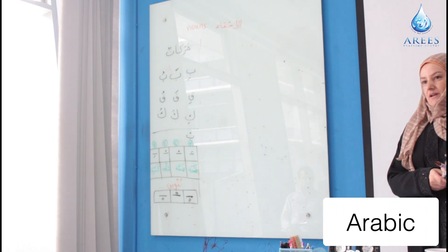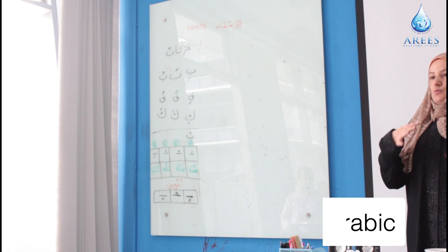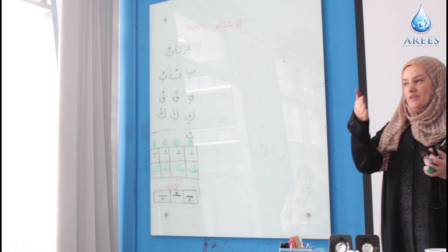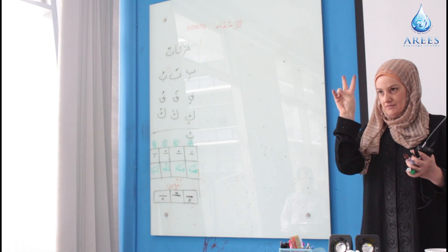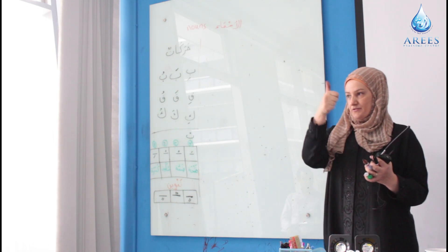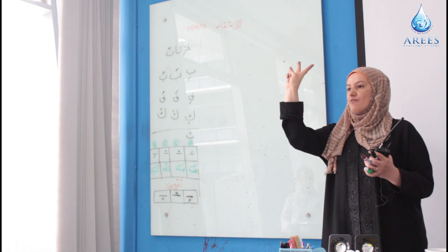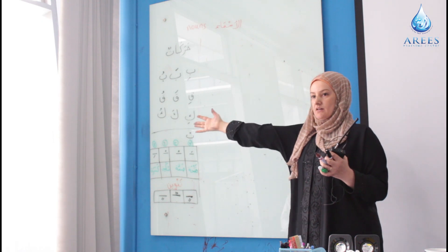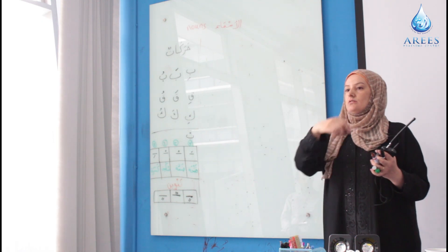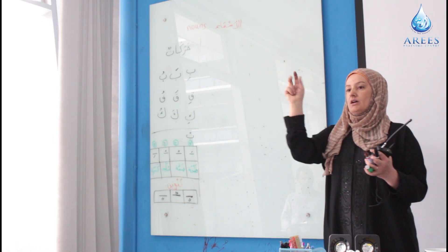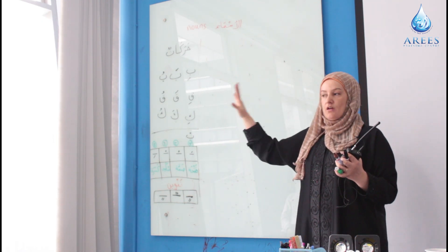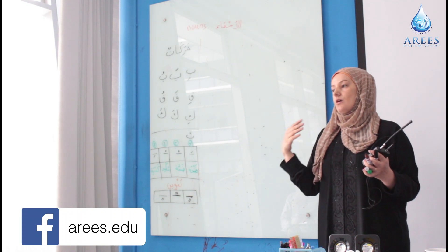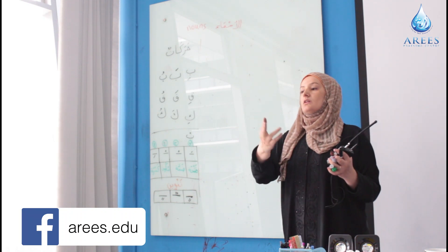In Arabic, I told you we have Mufrad, we have Musanna, and we have Jama'. Mufrad is singular, Musanna is dual — that's easy. How do we form Musanna?